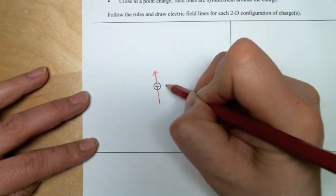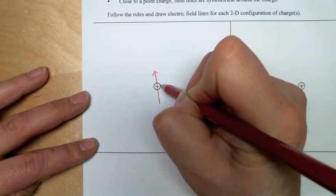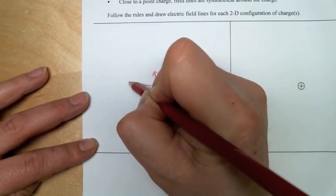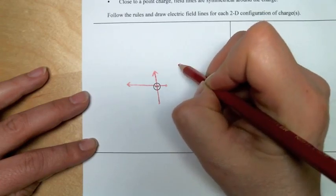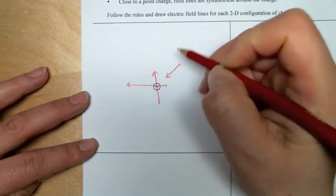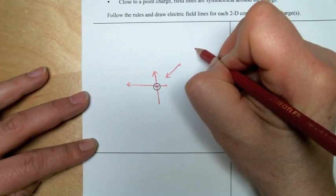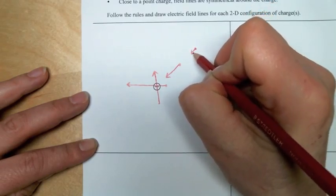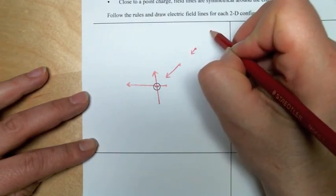So we can do this anywhere in the region of this negatively charged particle. And the closer we have our small positive test charge, the greater the force. As we put a small positive test charge farther away and farther away, there is less and less force.